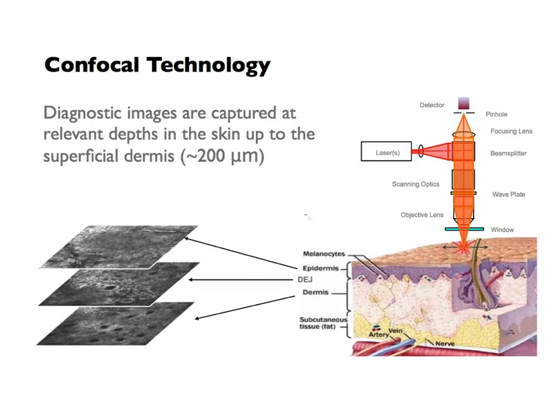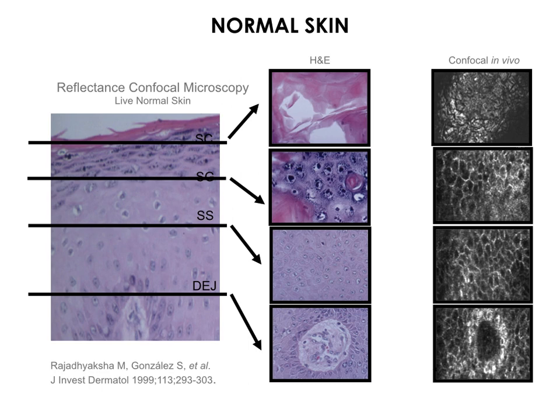A low-power laser beam at near-infrared wavelength penetrates the superficial layers of the skin. Reflected light returns to the detector filtered by a very small pinhole. This enables horizontal scans of the tissue at very high resolution, similar to histopathology, as shown in this section of normal epidermis where hematoxylin and eosin, the colored image, is compared with confocal microscopy in black and white.